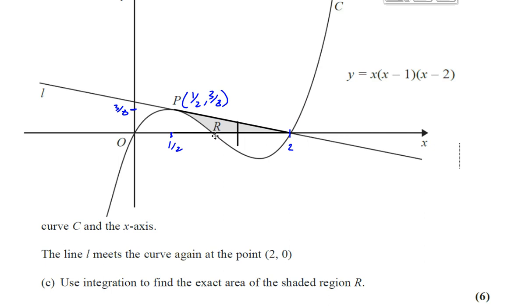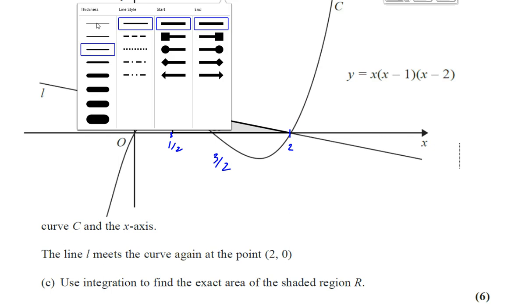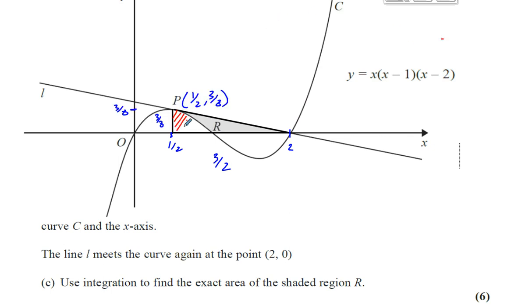Let's make a triangle here — from the point P down to 2 and across. We can find the area of that triangle, because we know the length of the base is the distance between a half and 2, which is 1 and a half, or 3 over 2. And we know the height of the triangle is 3 over 8, that's the y-coordinate of P. So we can find the area of this triangle, and there is an area under the curve which we don't actually need. If we take away that area from the triangle area, we will have found the area of the shaded region. Finding the area under the curve is where the integration comes in.